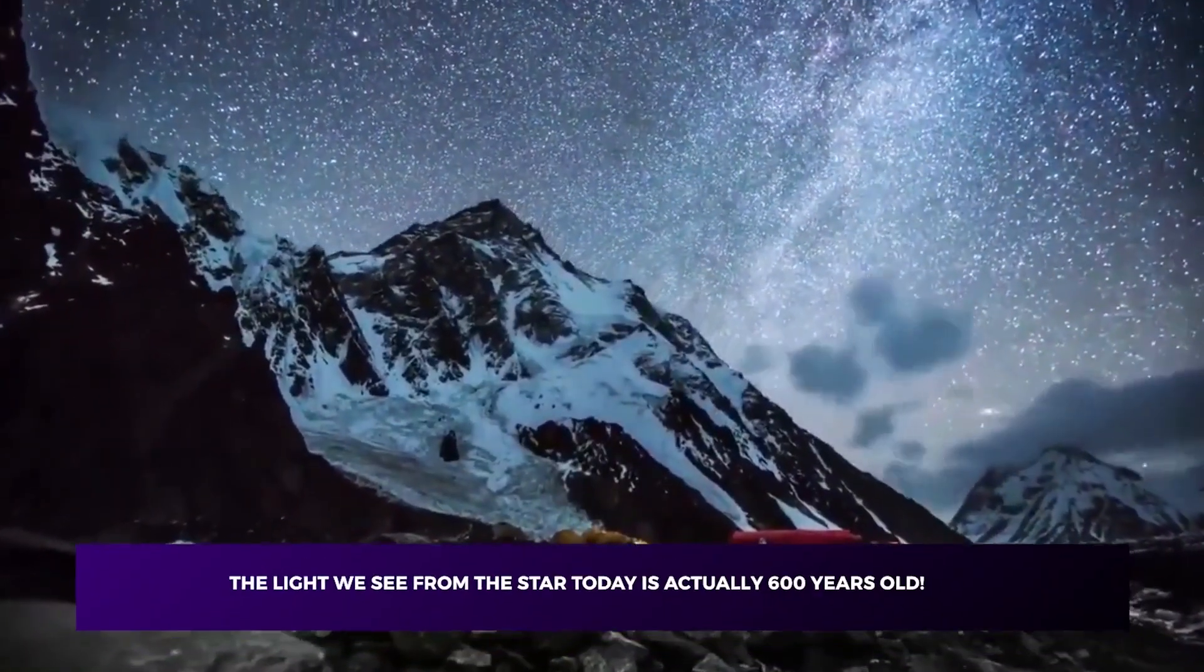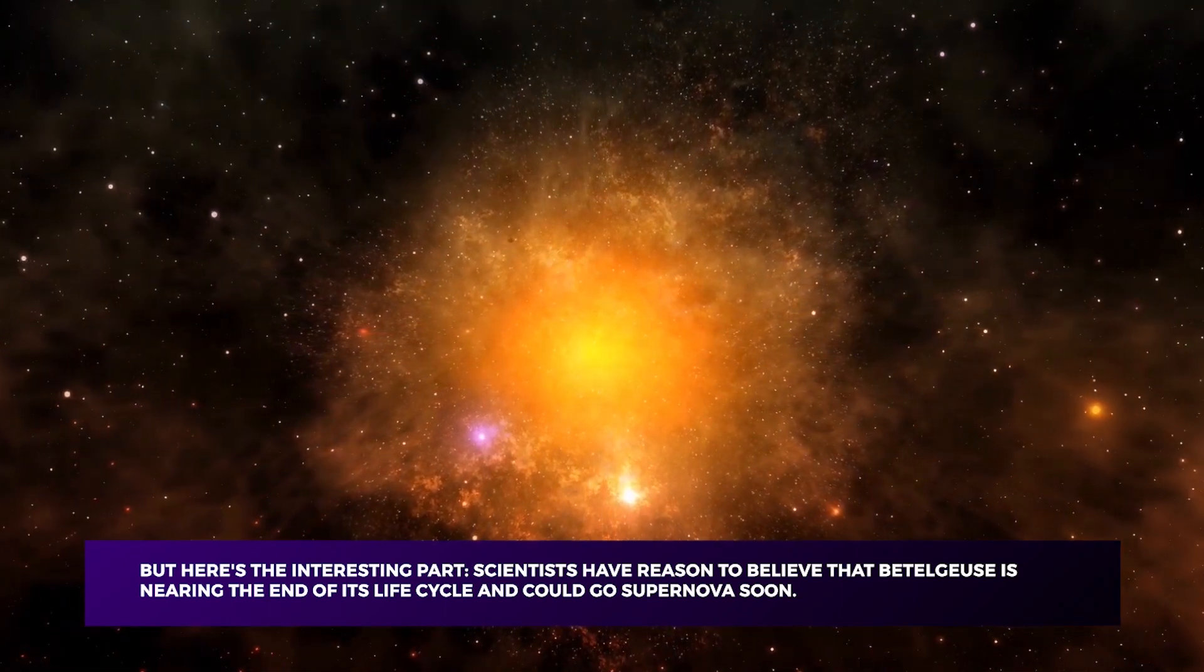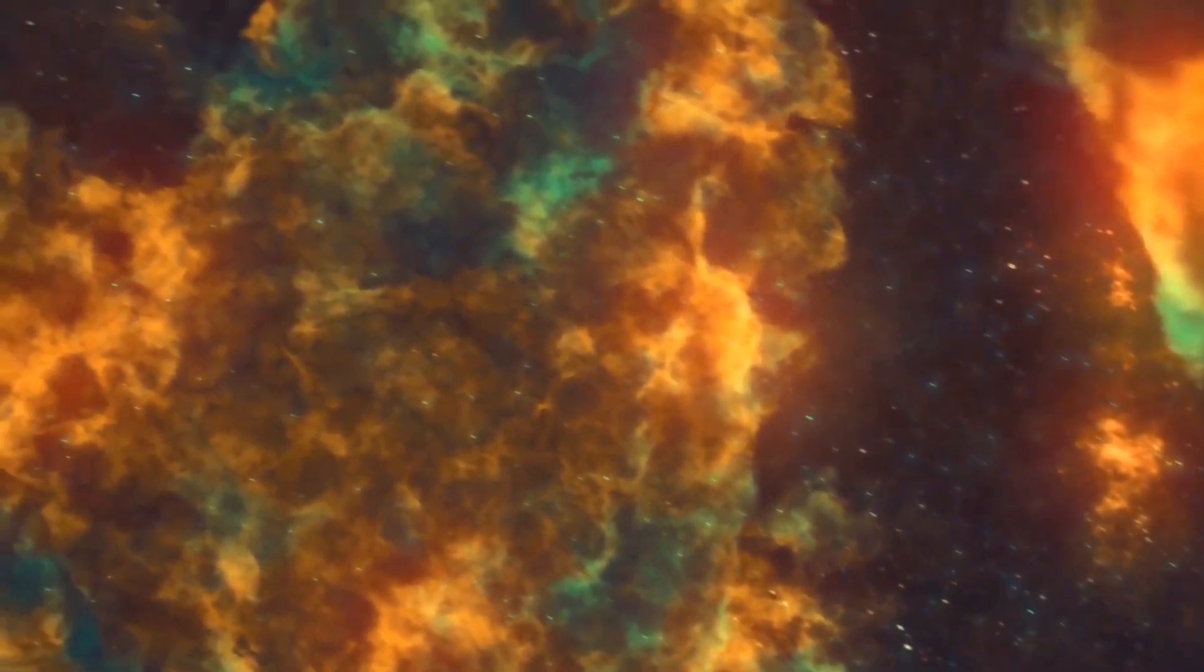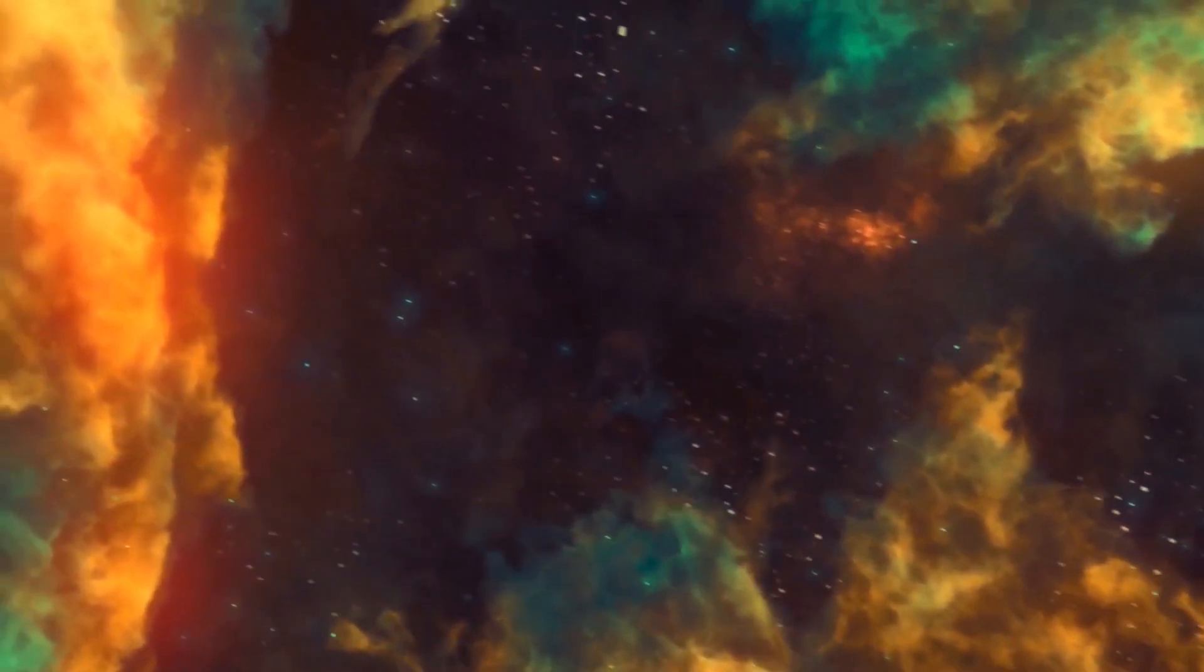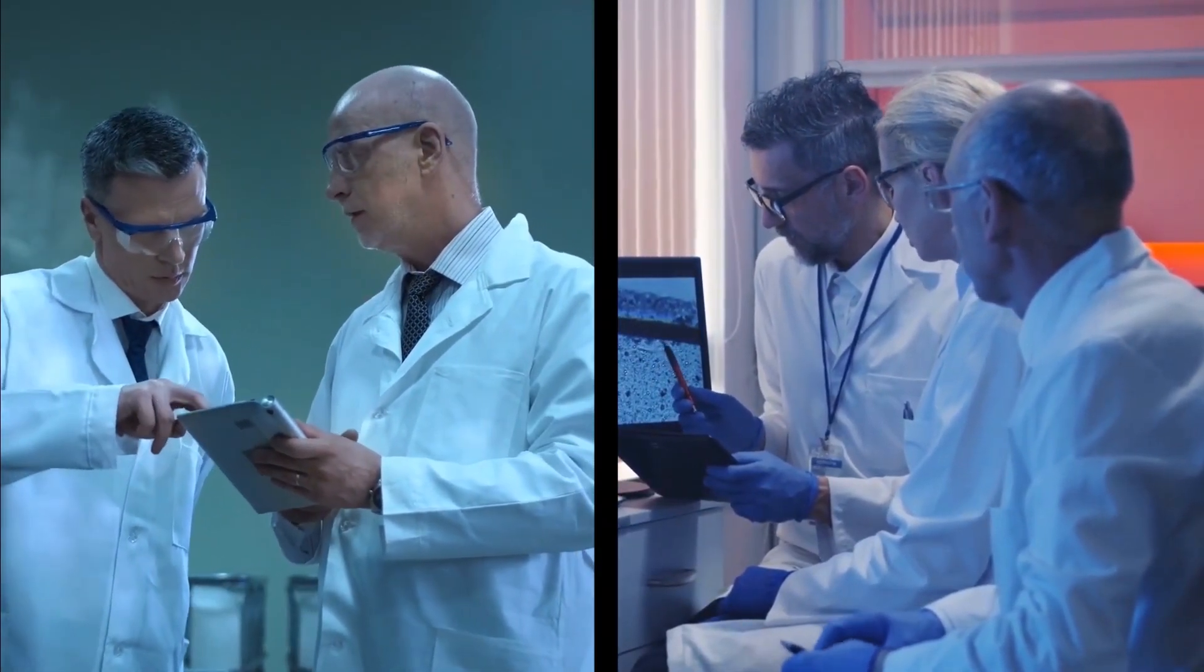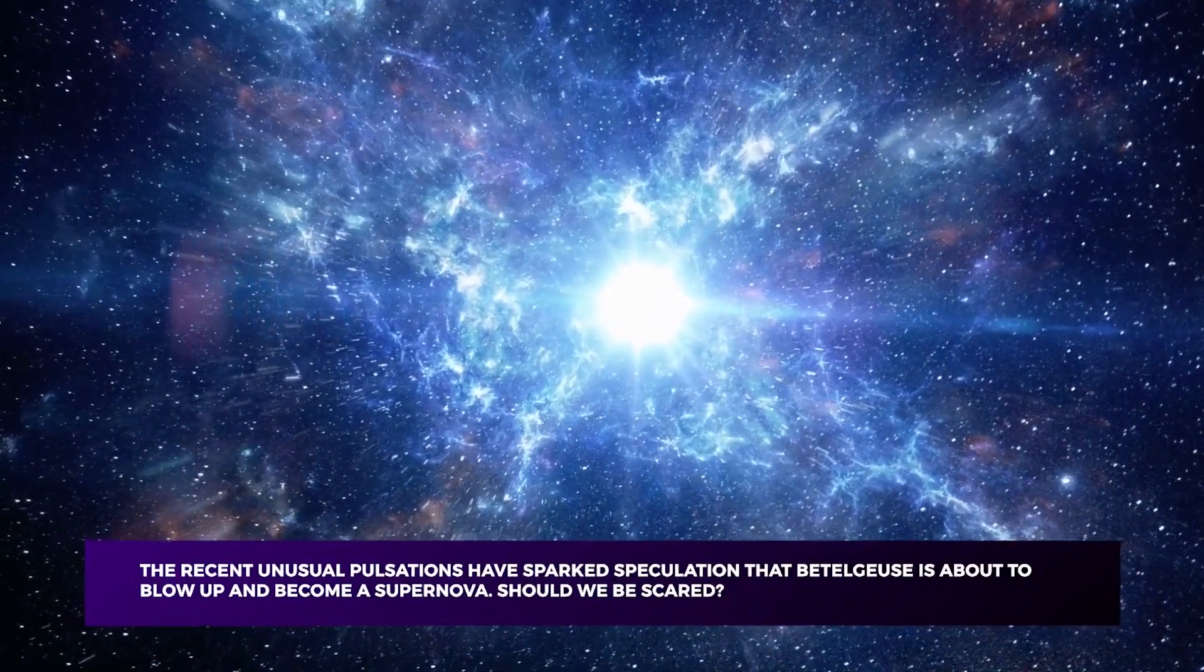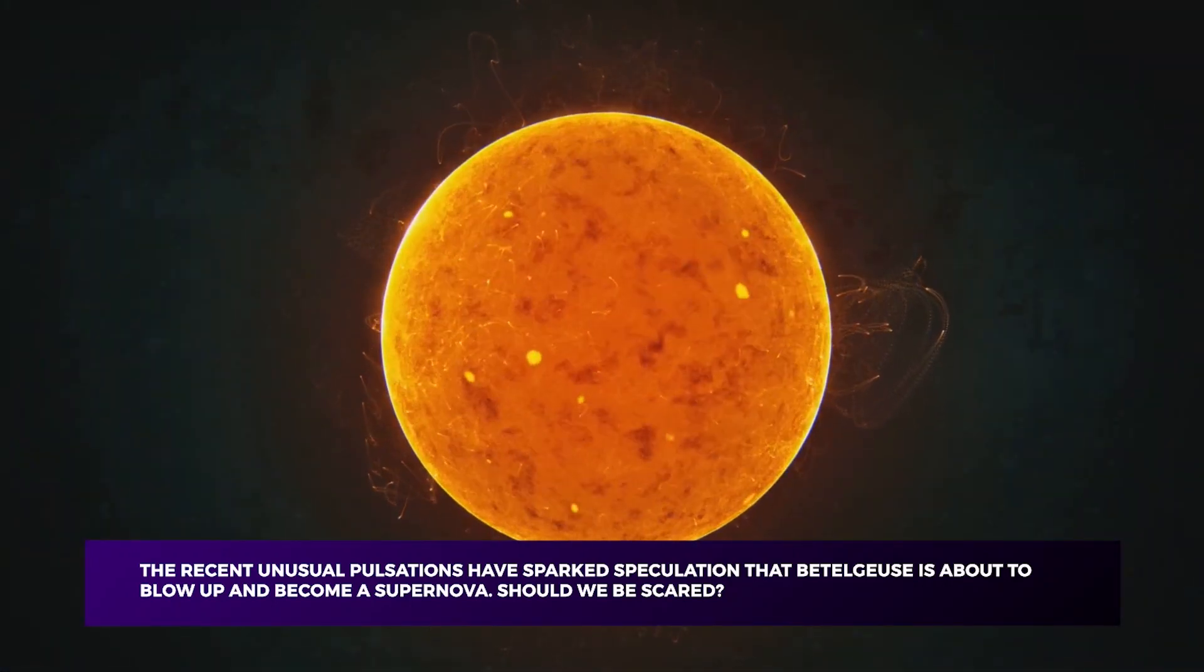The light we see from the star today is actually 600 years old. But here's the interesting part. Scientists have reason to believe that Betelgeuse is nearing the end of its life cycle and could go supernova soon. A supernova is the biggest explosion humans have ever seen, and each blast is the extremely bright, super powerful explosion of a star. With Betelgeuse's impending doom, scientists are keeping a close eye on it, and astronomers all over the world are eager to witness such a rare event. The recent unusual pulsations have sparked speculation that Betelgeuse is about to blow up and become a supernova. Should we be scared?